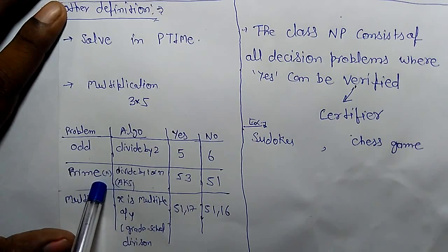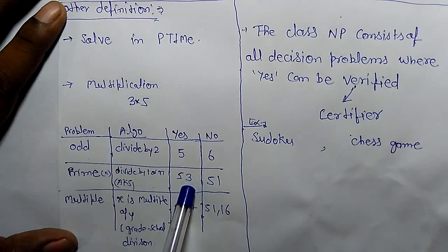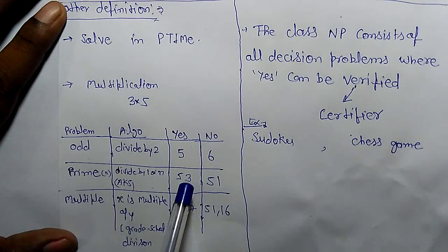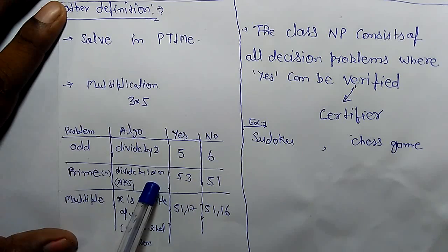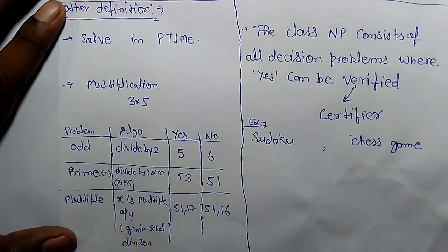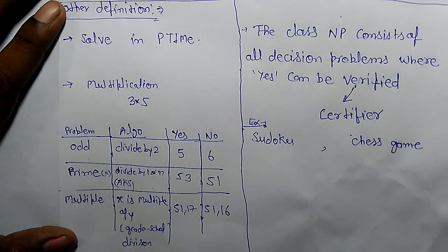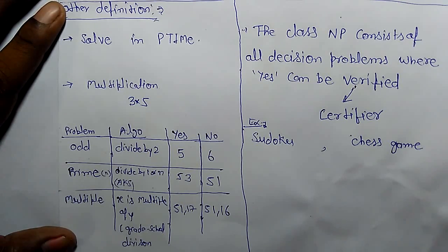If n is a number and you have to find whether it is prime or not, there is some algorithm for that which will recognize whether 53 is prime or not. If it is divided by one or itself then it is prime, otherwise not. These are problems that can be solved in polynomial time. So that is a P class problem.